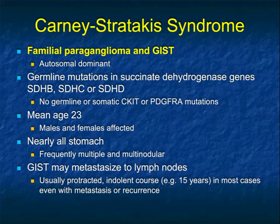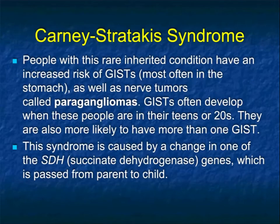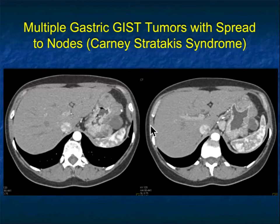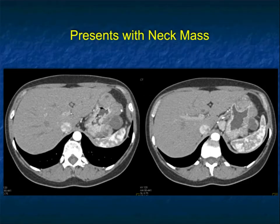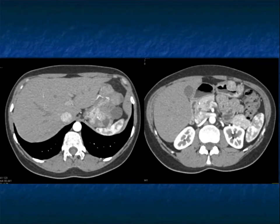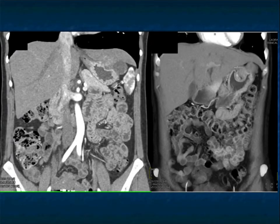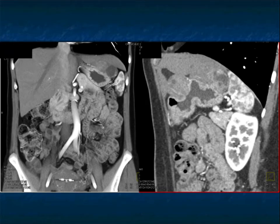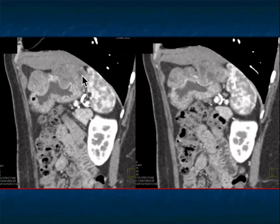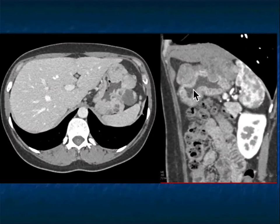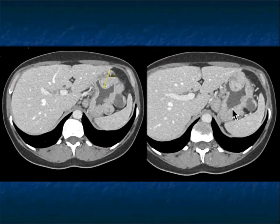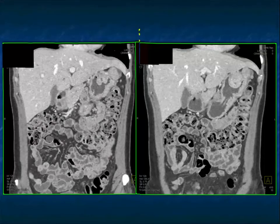Carney striatous syndrome is a really unusual syndrome. Younger patients, GIST tumors in the stomach, often multiple — they can metastasize. The paragangliomas are really what allows you to make the diagnosis. Here's an example of multiple gastric GIST tumors published by Hannah Recht in Radiology this past year. When I quiz people on this, the patient has a neck mass and multiple gastric GIST tumors — a very classic appearance. Most patients with GIST tumors will have single lesions. When you see multiple lesions like this, you should consider a syndrome, particularly when it's a younger patient. This is the only case of this syndrome I've seen, and Radiology published it.